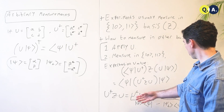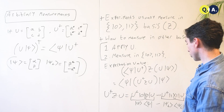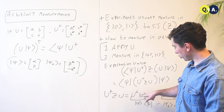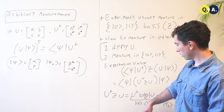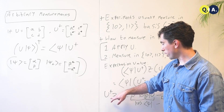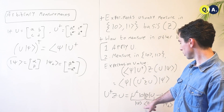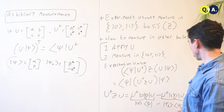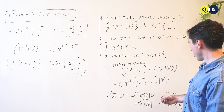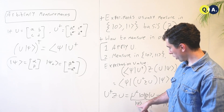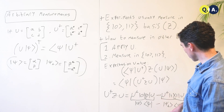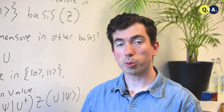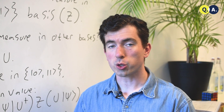Now, U†ZU we can write out like so, and if we label the state U†|0⟩ as |ψ⟩, then U†ZU is equal to |ψ⟩⟨ψ| − |ψ⊥⟩⟨ψ⊥|. This is a measurement that will return +1 if the state is |ψ⟩ and −1 if the state is |ψ⊥⟩, giving us an arbitrary basis to measure in.